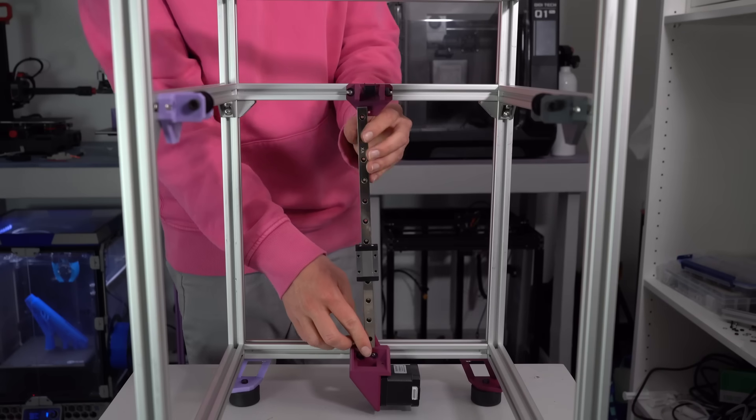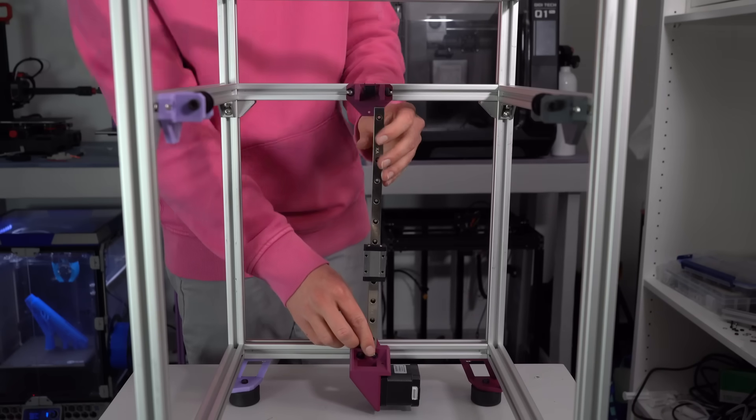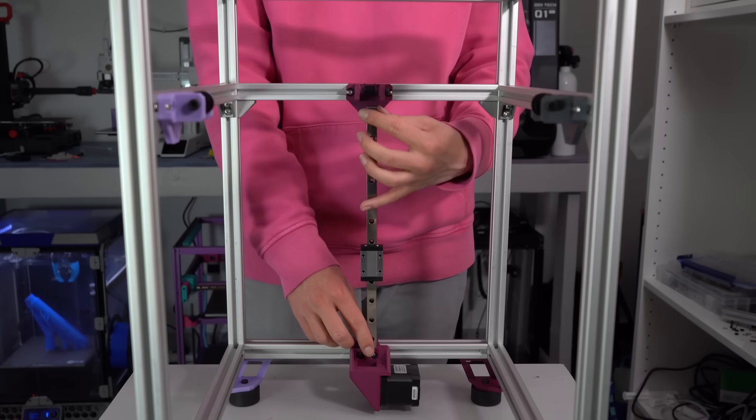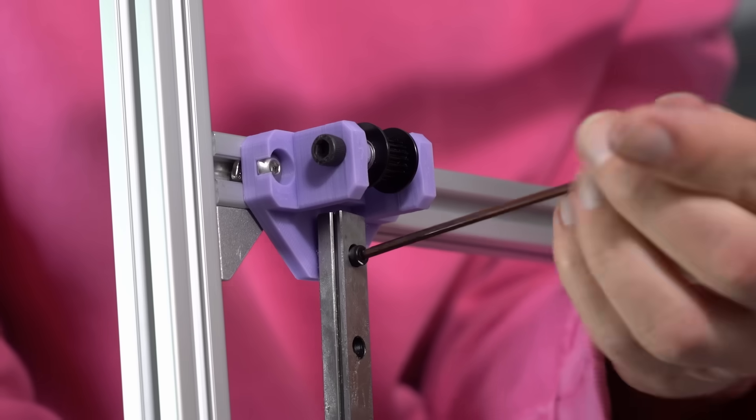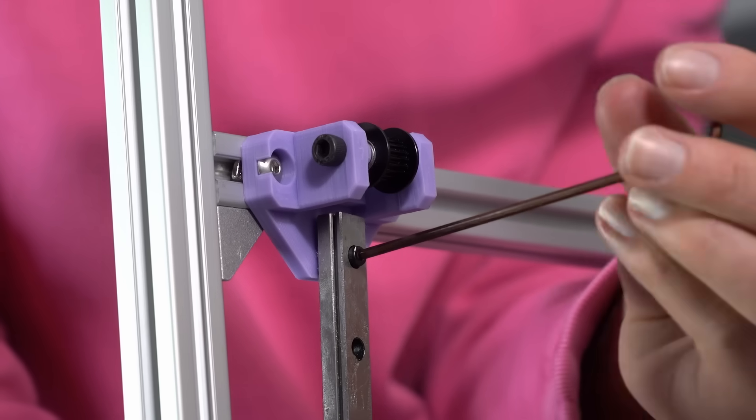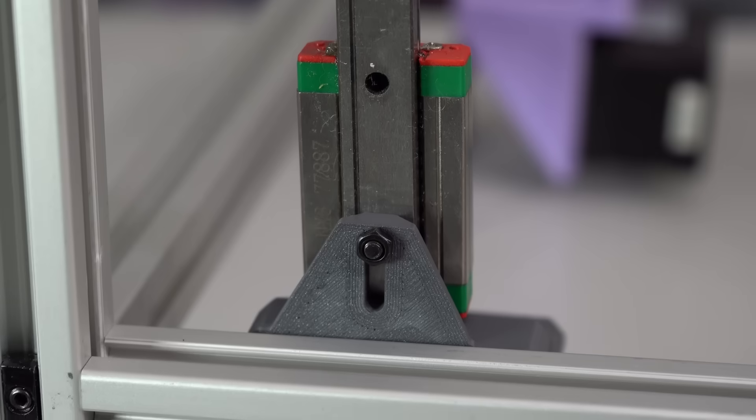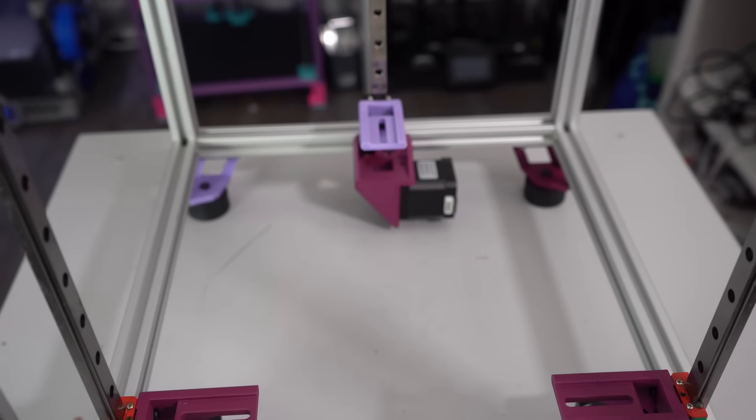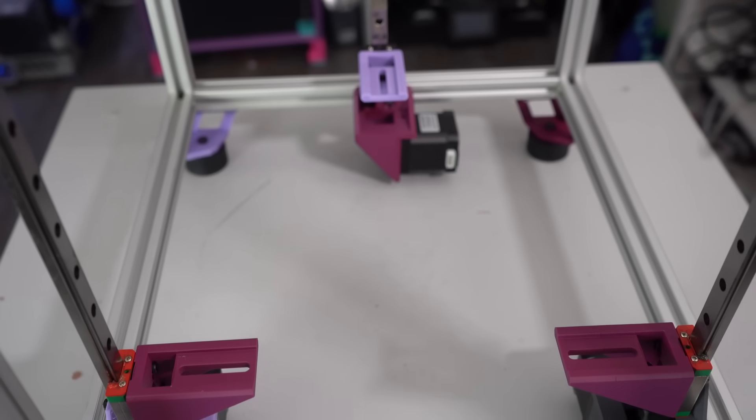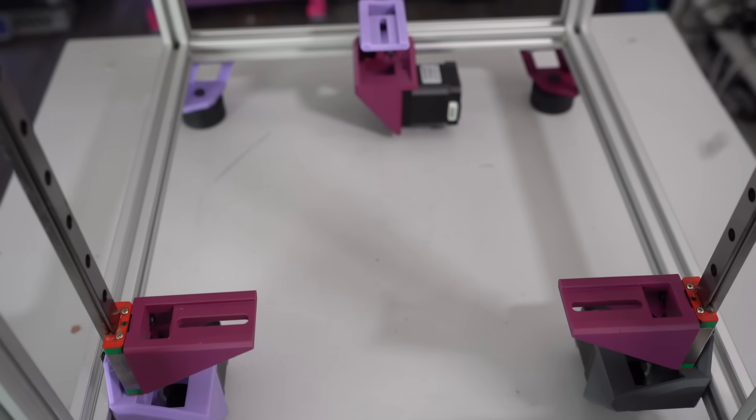Next we can install the Z rails and the bed mounts. The Z rails simply attach to the motor mounts at the bottom and the idlers at the top with M3 screws and a nut on the other side. The bed mounts bolt directly to the linear rail carriages. Leave these quite loose for now as we still need to attach the Z belts.